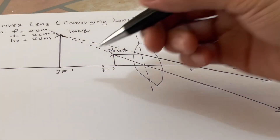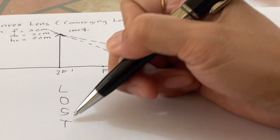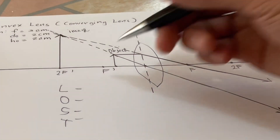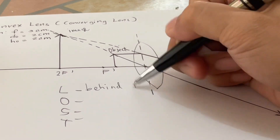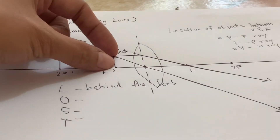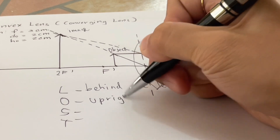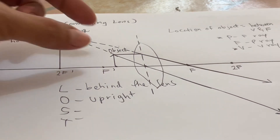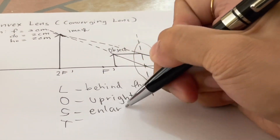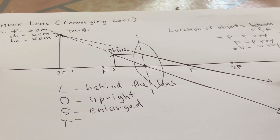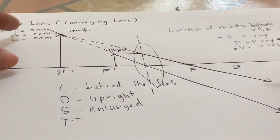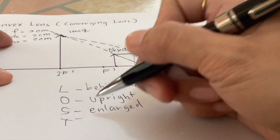To describe the image using the acronym LOST: for the Location, the image was formed on the same side where the object is located, so we say the image was formed behind the lens. For Orientation, comparing to the object, it is upright. For Size, the image is bigger compared to the object, so we say enlarged. For Type, since the image is upright and formed on the same side as the object, the type of image would be virtual.